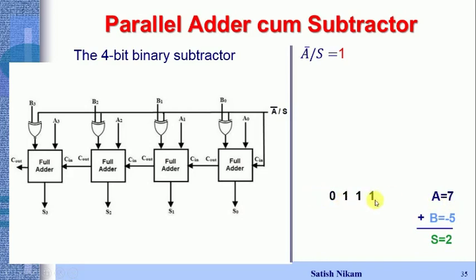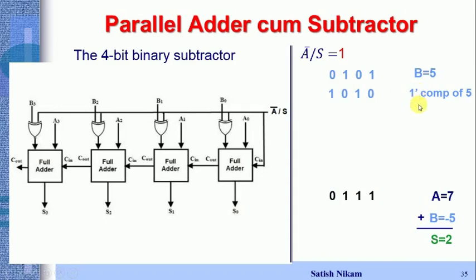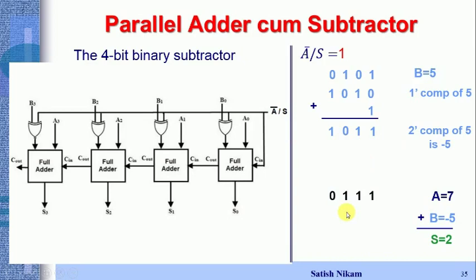A = 7 = 0111. Positive 5 = 0101. The one's complement of 5 is 1010, and adding 1 gives the two's complement 1101, which represents negative 5. So we perform 0111 + 1101 in the adder circuit to get the subtraction result.